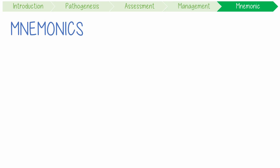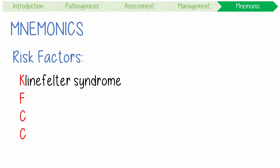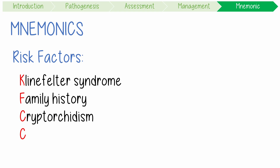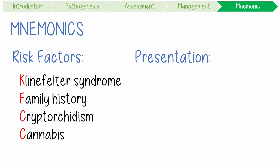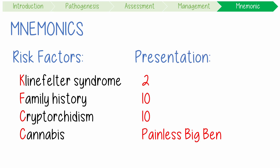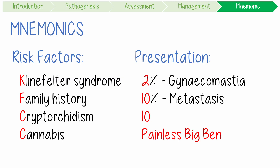To summarise with mnemonics: risk factors can be remembered as KFCC — Klinefelter syndrome, family history, cryptorchidism, and cannabis use. Presentation can be remembered as 'two tens and a painless big bend': 2% present with gynaecomastia, 10% with metastatic presentation, 10% with painful testicles from tumour growth, and a painless testicular mass is the most common presentation.